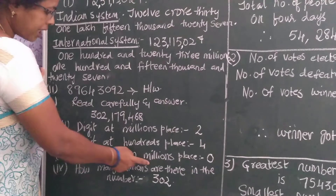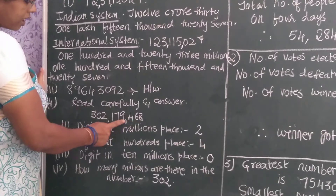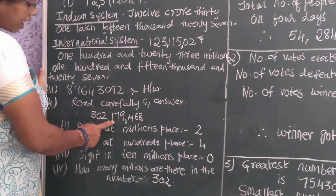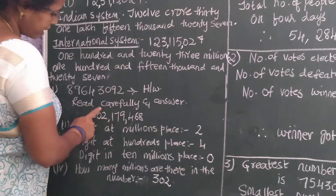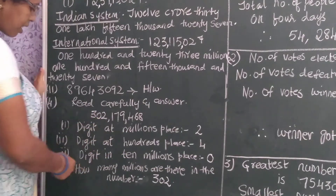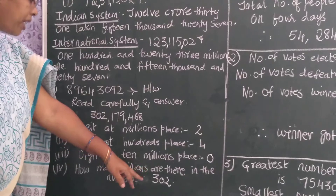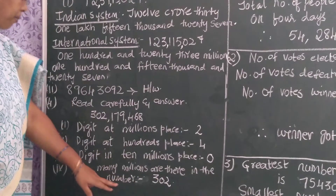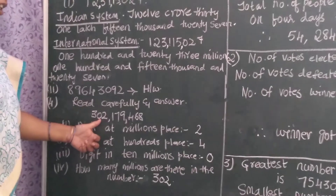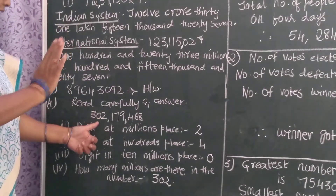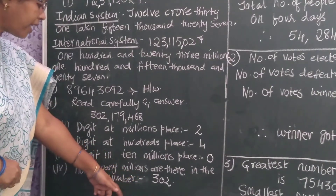Digit in ten millions place. Now I can read the place values: ones, tens, hundreds, thousands, ten thousands, hundred thousands, millions, ten millions. So digit in ten millions place is zero. Next, how many millions are there in this number? This all comes under millions when you read the place values. Therefore it is three hundred and two millions.